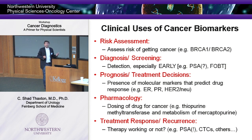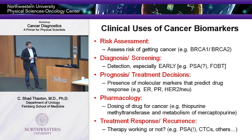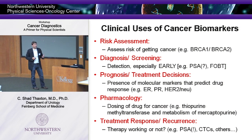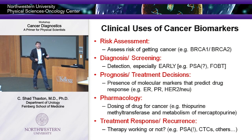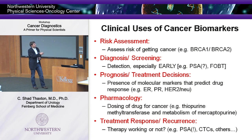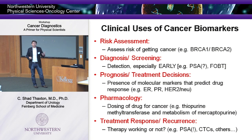Biomarkers are used for prognosis and treatment decisions. The presence of specific molecular markers in tumor specimens can give a very good idea of the patient's prognosis and whether drugs specifically target those alterations. For instance, the estrogen receptor in breast cancer allows use of specific drugs; Her2Neu is another breast cancer example where specific therapies can be chosen. Biomarkers are also used in pharmacology — gene sequencing to see whether individuals metabolize cancer drugs, since toxic drugs that can't be metabolized can build up and cause significant morbidity.